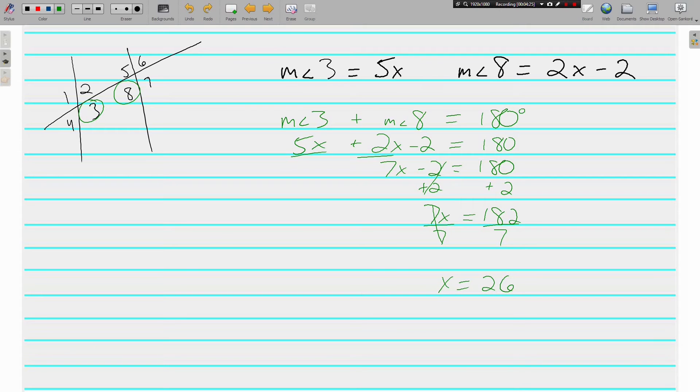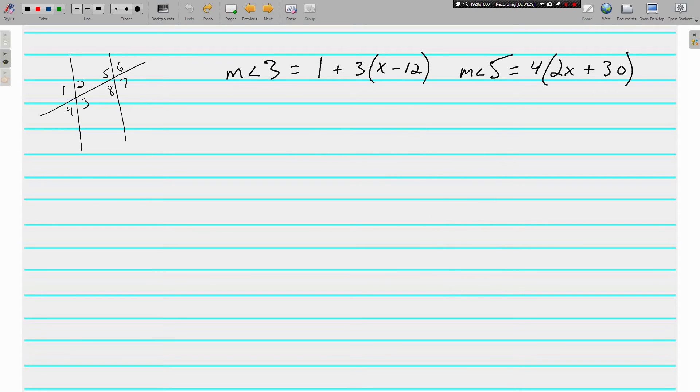One more together. Here we have angle 3 and angle 5. Angle 3 and angle 5 are alternate interior angles. Alternate because they're on opposite sides of the transversal. Interior because they're inside the parallel lines. And we know that alternate interior angles are congruent. So the measure of angle 3 is equal to the measure of angle 5.